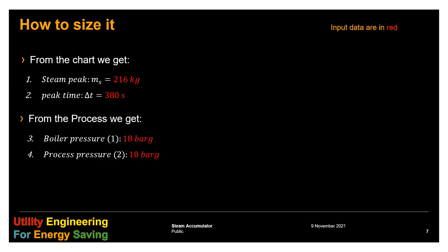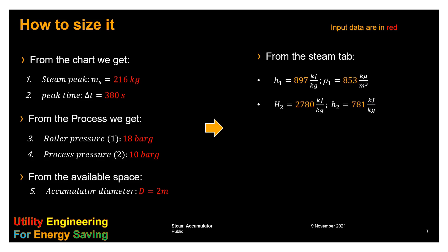From the chart we get the steam peak 216 kg and the peak time 380 seconds. Moreover, from the process we know the boiler pressure is 18 bar gauge and the process pressure is 10 bar gauge. From the available space we say accumulator diameter must be 2 meters. From the steam tables we get the values of h1 and rho1, the enthalpy and density of liquid at high pressure respectively, and also capital H2 and lower h2, the enthalpy of steam and liquid at lower pressure.